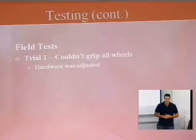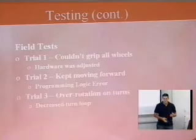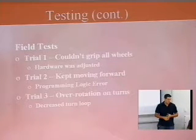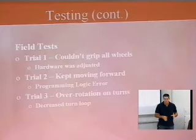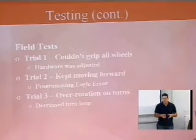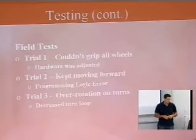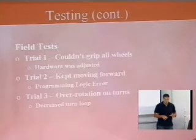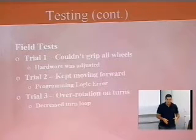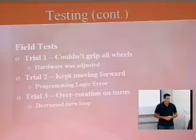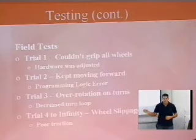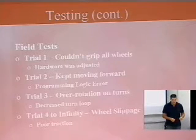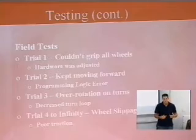We did a number of trials. In the first, all the wheels couldn't grip because the robot wasn't level, so we had to disassemble and reassemble it, leveling out all the wheels. In the second trial, the robot kept moving forward instead of sensing walls due to a programming logic error. In the third trial, it over-rotated on turns and ran into a wall. The final ongoing trial showed wheel slipping because the wheels were worn out and couldn't completely grip the ground.